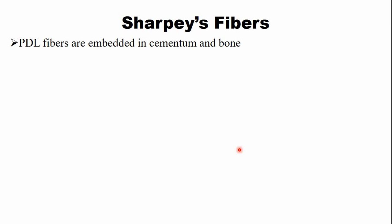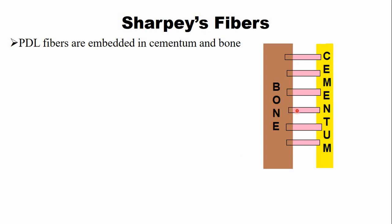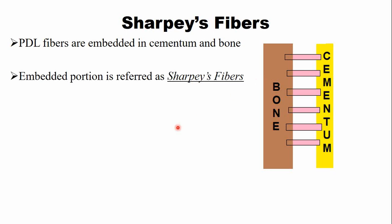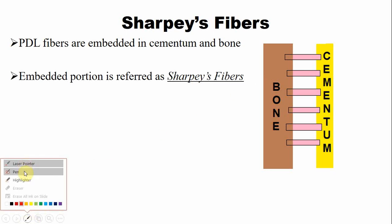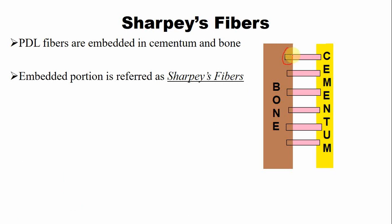There is a term known as Sharpey's fibers. Most of the PDL fibers are embedded on one end into the cementum and on the other end into the alveolar bone. Looking at this picture, this is the cementum and this is the bone. These are the PDL fibers. Some portion of the PDL fibers are embedded into the cementum and on the other end into the bone. This embedded portion is known as Sharpey's fibers — both into the cementum and into the alveolar bone.